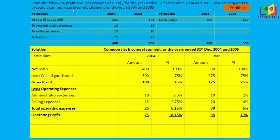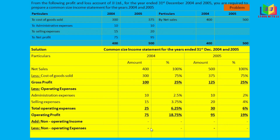There are no non-operating incomes or non-operating expenses in this problem, so we put a dash for both. Therefore, the operating profit is the same as the net profit for both years.